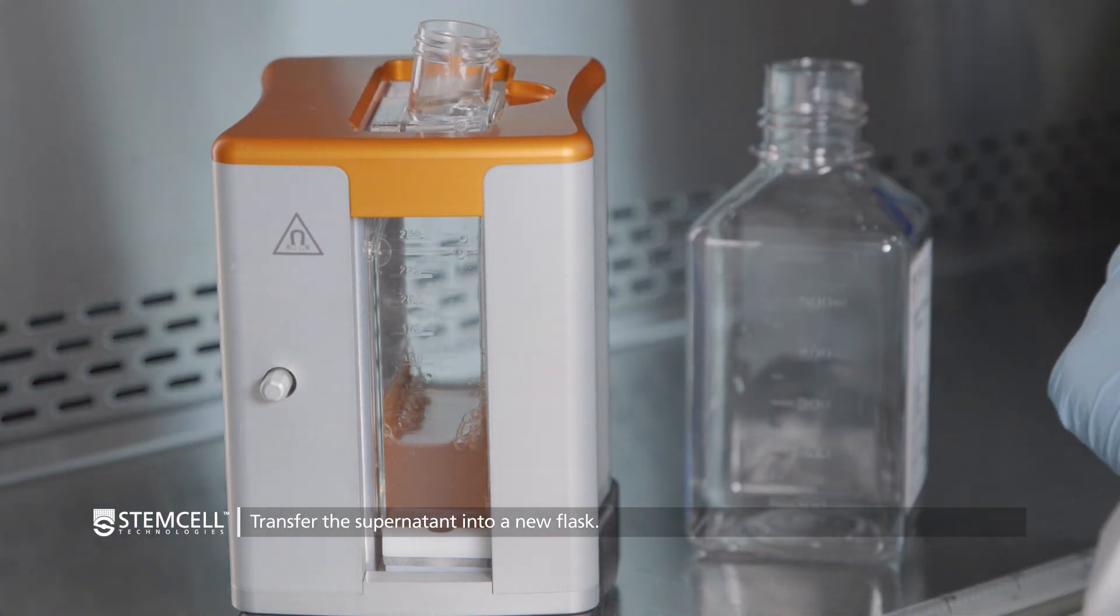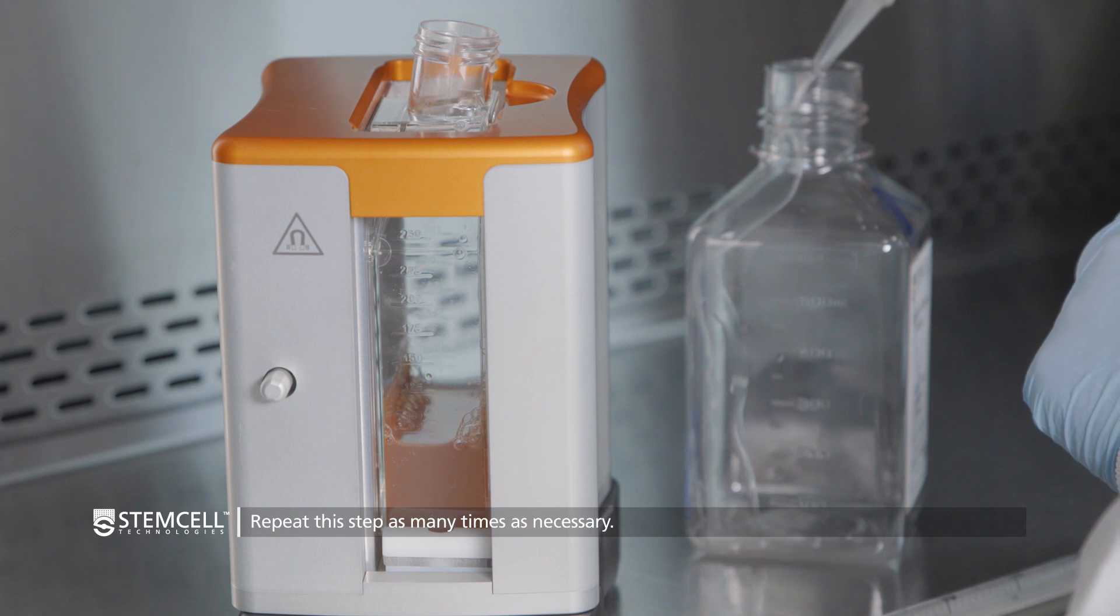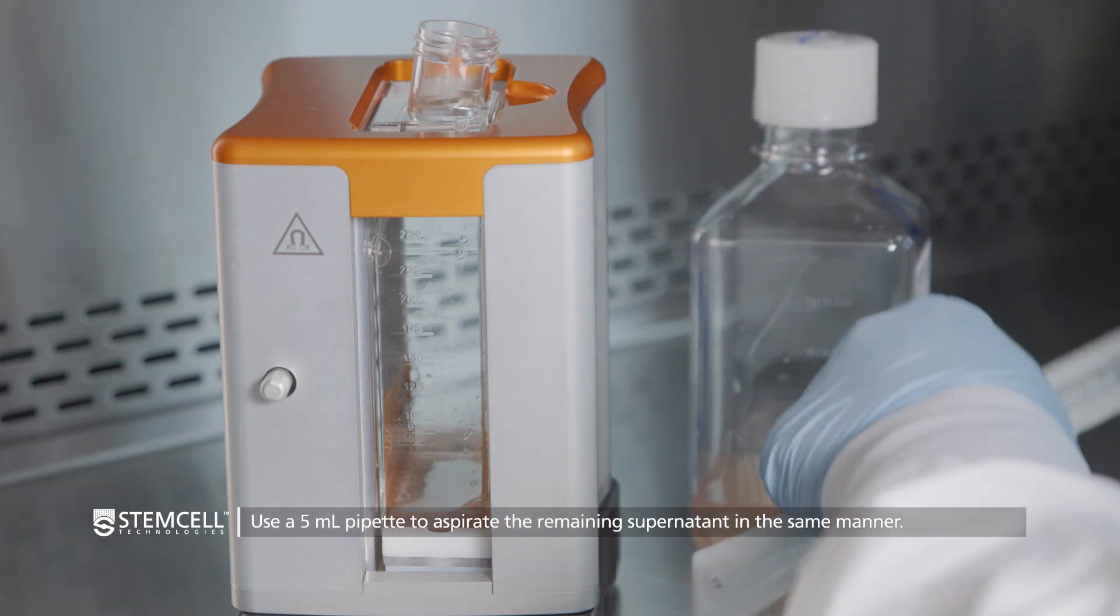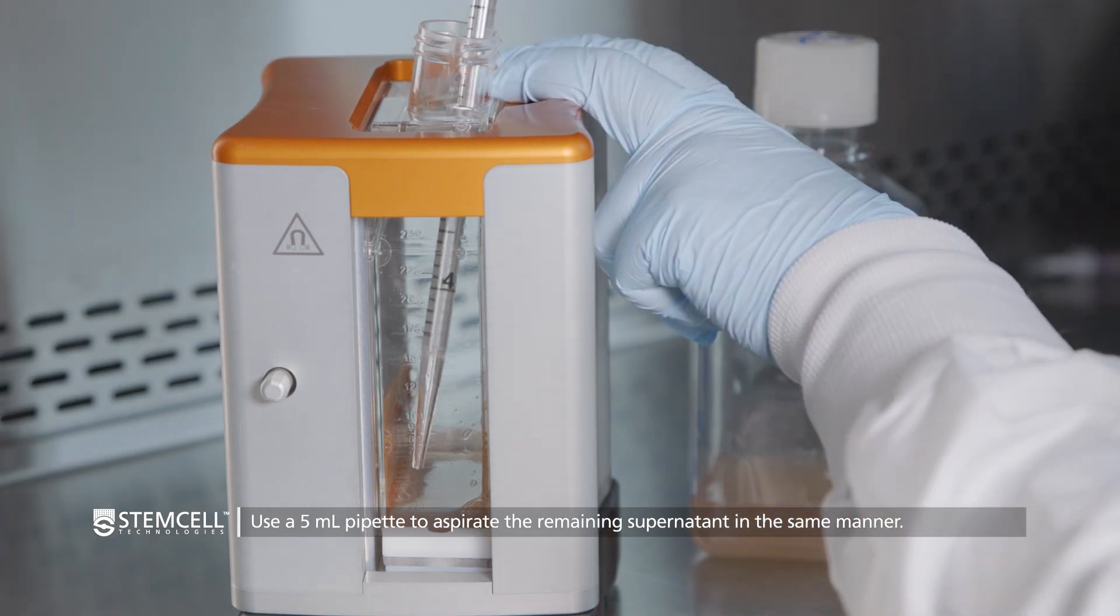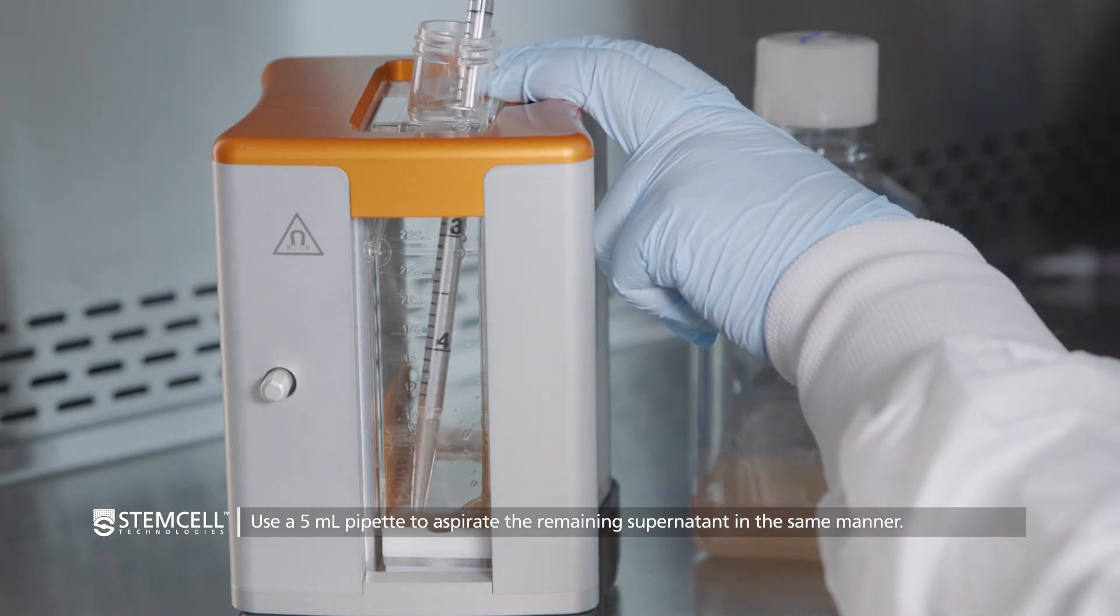Then, release the supernatant into a new flask. Repeat the step as many times as necessary. Once you have taken out the bulk of the volume, you can use a 5ml pipette to aspirate the remaining supernatant in the same manner.